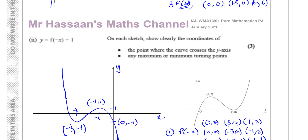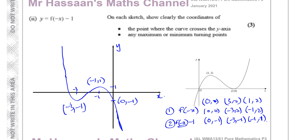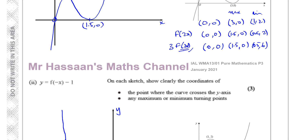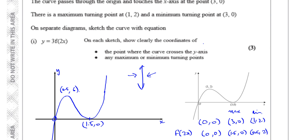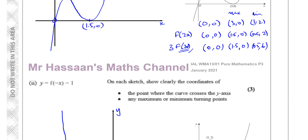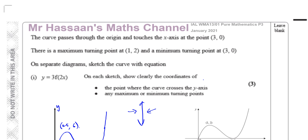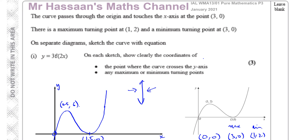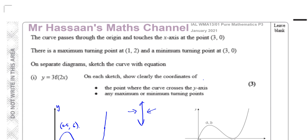That's the answer to question number 2. This is a transformations topic — just remember: what's inside the function affects the x-coordinates and you do the opposite, so for 2x you multiply by a half. What's outside the function affects only the y-coordinates, so you do the same thing, like multiplying by 3. Other questions from the January 2021 paper and from the transformations topic in P3 you'll find in the playlists. You can subscribe to my channel by clicking the link. Thank you for watching.